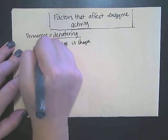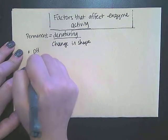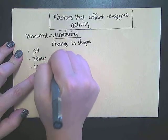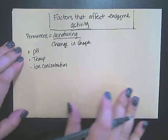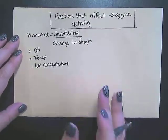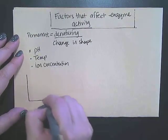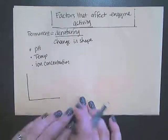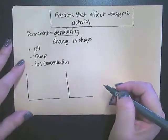So we talk about pH, we talk about temperature, we talk about ion concentrations — this can include salt. One of the key things you need to know about enzyme activity is being able to interpret graphs either with temperature or with pH. So we're going to do just a quick sketch of both of them.